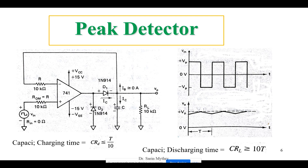So there is one possible solution in order to detect the peak values of non-sinusoidal waveforms — that is called the peak detector. The peak detector is mainly used for detecting the peak values of non-sinusoidal waveforms. This circuit is used for measuring the positive peak values of a square waveform. It will be measuring the positive peaks of this particular square waveform.